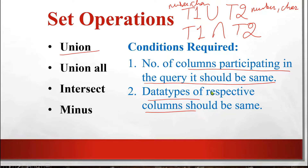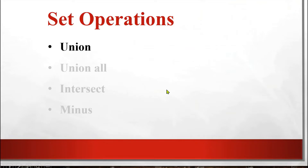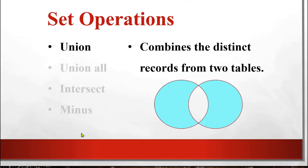You can perform these operations with similar types of selections only. If you take complete tables, then the tables must have the same number and type of columns, and the same order of columns. These points will be clearer when we start the practical. The first operation is UNION — it will combine the distinct records from two tables. If the same record exists in either table, it will be selected only once.